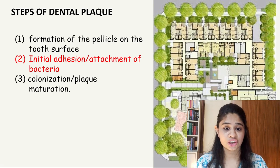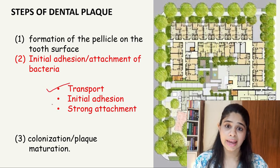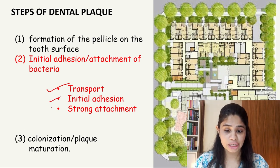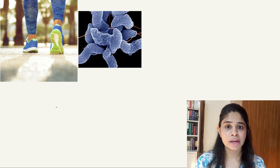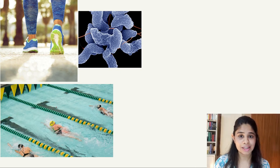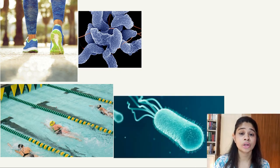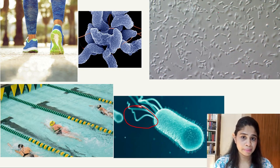The second step is the initial adhesion and attachment of the bacteria, which is broken down into three categories: transport of bacteria to the surface, initial adhesion which is reversible, and strong attachment which is irreversible. For transport, bacteria can move via chemotaxis — active movement towards a chemical stimuli — or they can swim through liquid flow using flagella or pili, since the oral cavity is a fluid environment. The third type is Brownian movement, a random movement of bacteria in the liquid medium where bacteria collide with particles and move randomly towards the substrate.